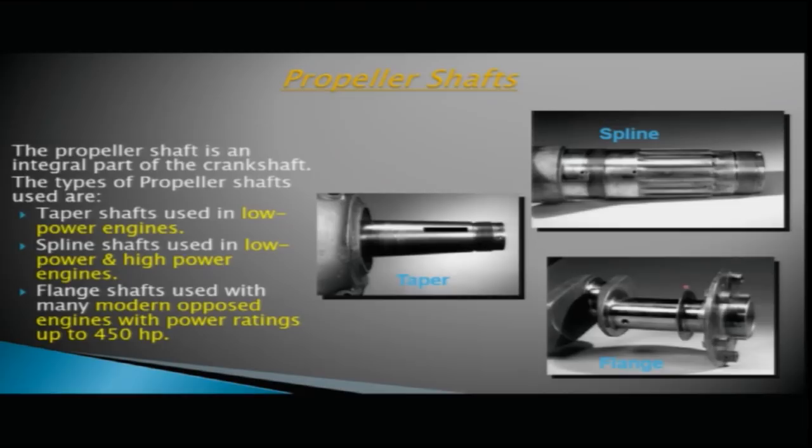The taper shaft is used in low-power engines. The spline shaft can be used on both low- and high-power engines. The flange shaft is used for many modern opposed engines with power ratings up to 450 horsepower.